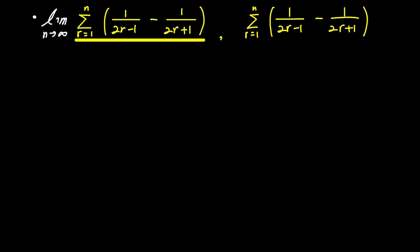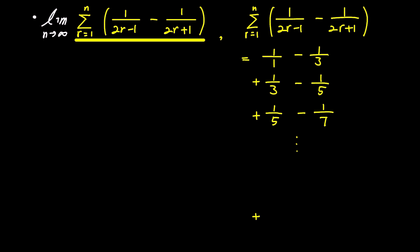To understand this, let's list a few terms. When r is 1, it becomes 1 over 1 minus 1 over 3. When r is 2, it becomes 1 over 3 minus 1 over 5. And for r equals 3, it becomes 1 over 5 minus 1 over 7. The last term is when r is n, resulting in 1 over 2n minus 1 minus 1 over 2n plus 1.